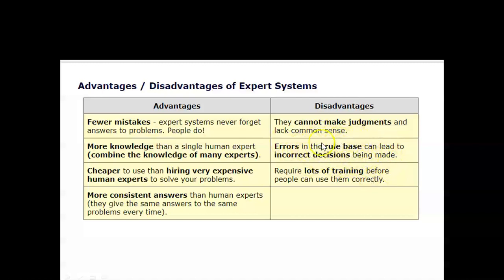Disadvantages: expert systems cannot make judgments and lack common sense. Errors in the rule base can lead to incorrect decisions — for example, if a rule incorrectly states that a temperature lower than 37 degrees means a fever, it would give an incorrect solution. They may also require lots of training before people can use the system correctly.